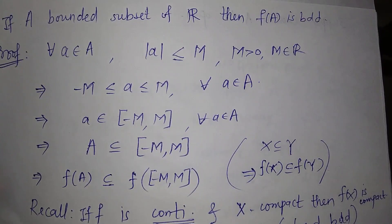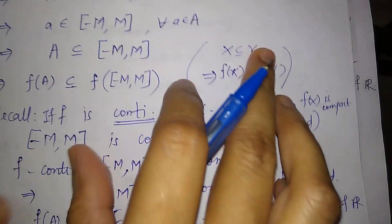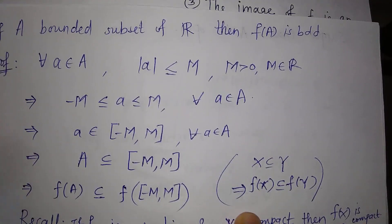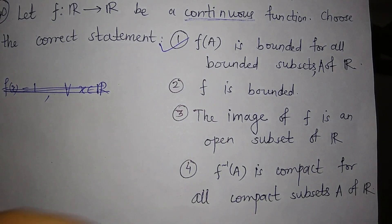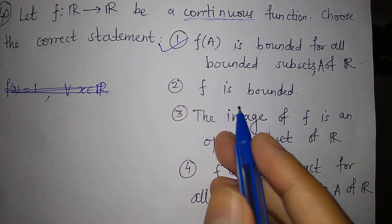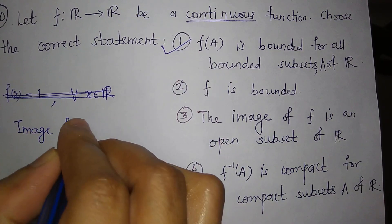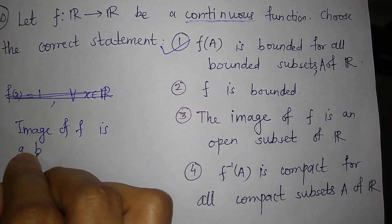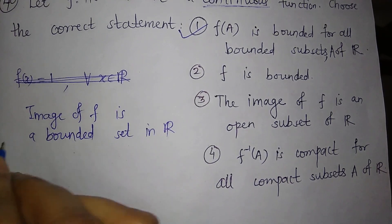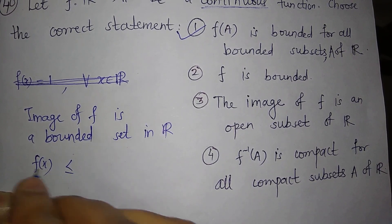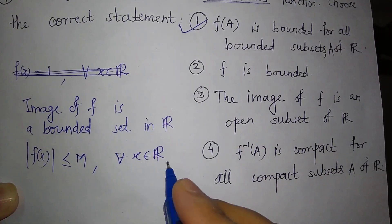So we have proved: if A is bounded then f(A) is bounded. The first option is the correct option. Now let us look at the second option, which says f is bounded. f is bounded means the image of f is a bounded set in R, i.e., |f(x)| ≤ M for all x in the domain R.